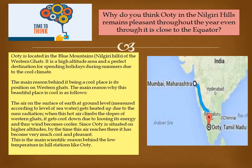Now it is time to think: why do you think Ooty in the Nilgiri hills remains pleasant throughout the year even though it is close to the equator? As you can see on the map, Ooty is near the equator, but its climate remains pleasant.